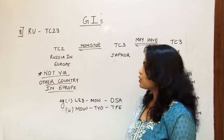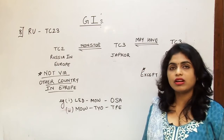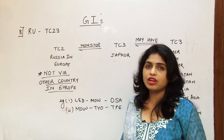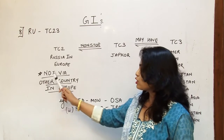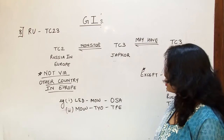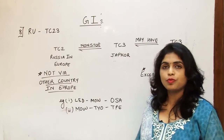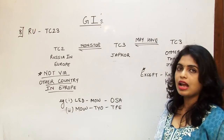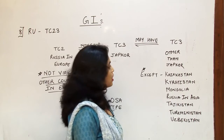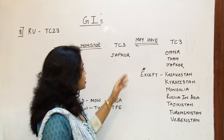We have the 8th global indicator which is RU. This covers area 2 and area 3. The conditions are: the flight must be leaving from Russia in Europe, which is the last point of exit of traffic conference area 2. It does not include any other countries in Europe. It has to be a non-stop journey, and the entry point into TC3 would be JAPCOR — that is Japan and Korea.